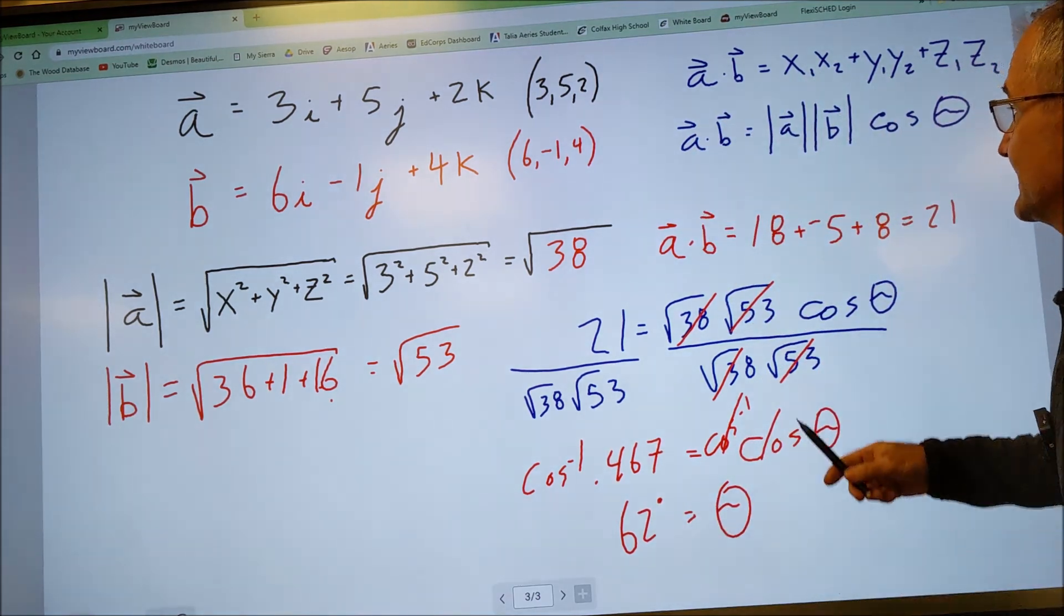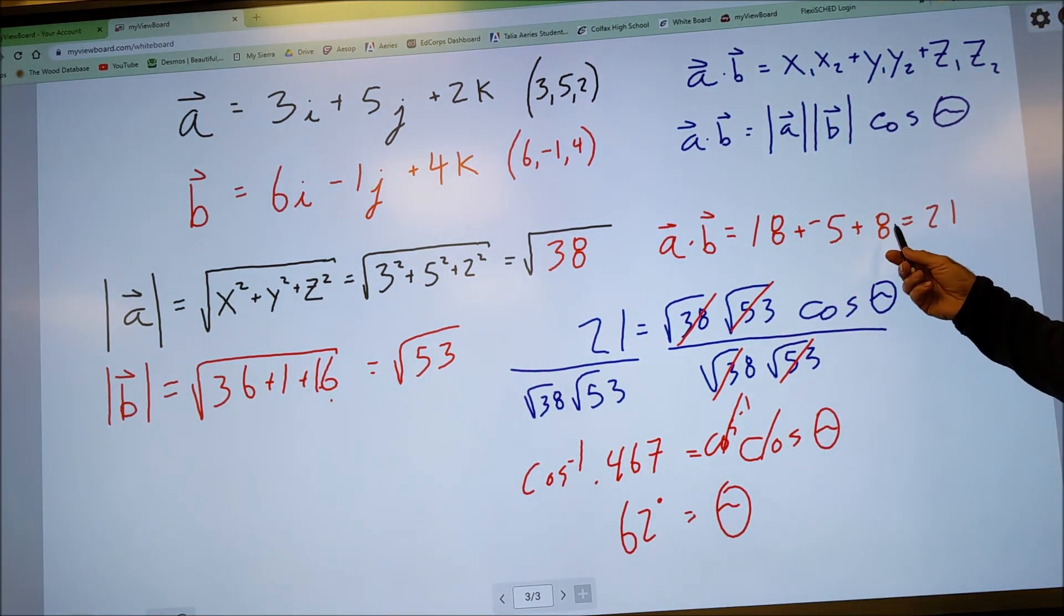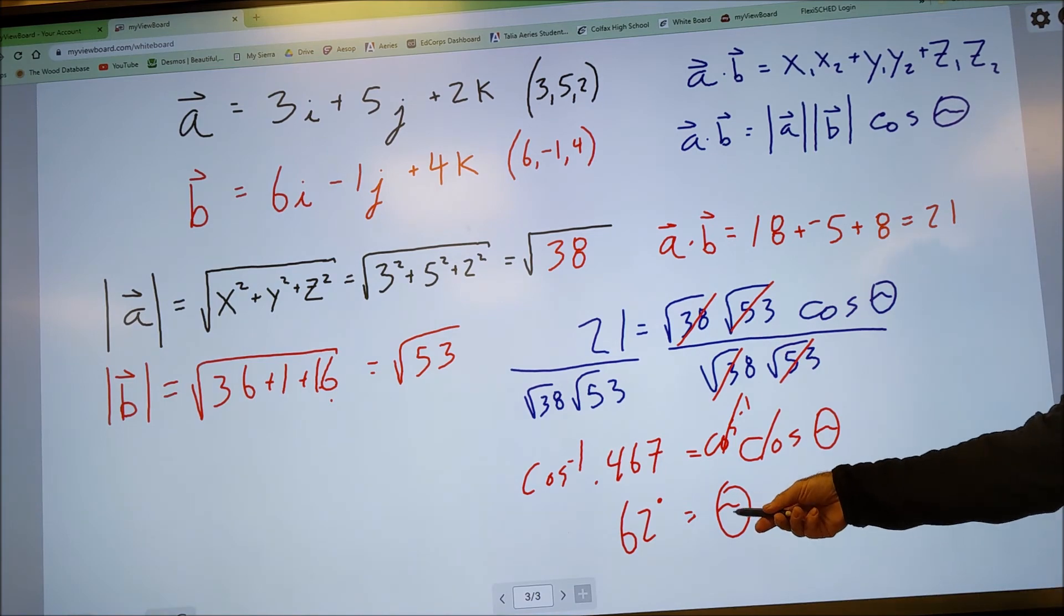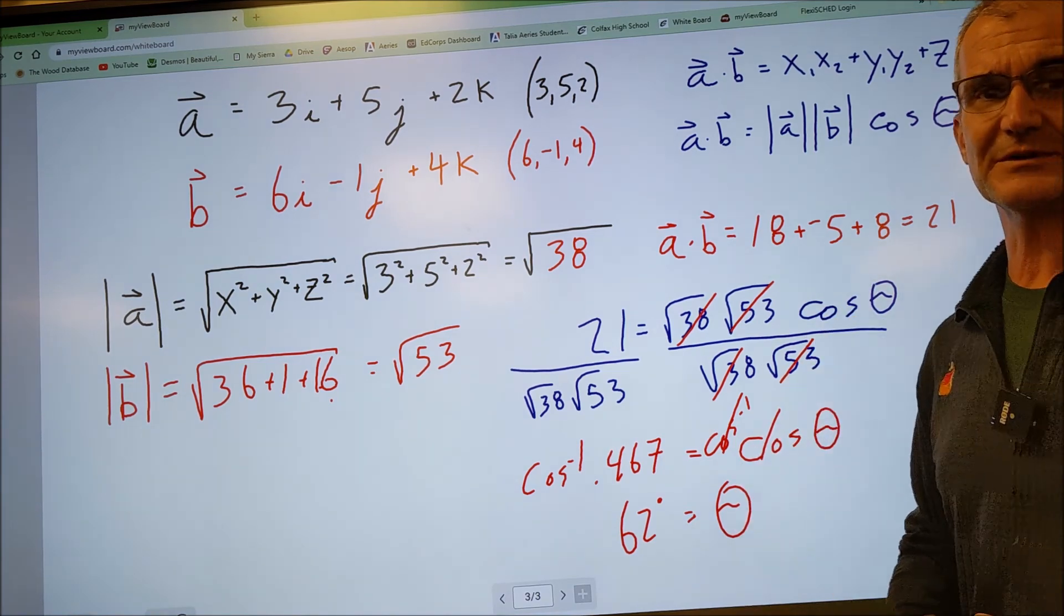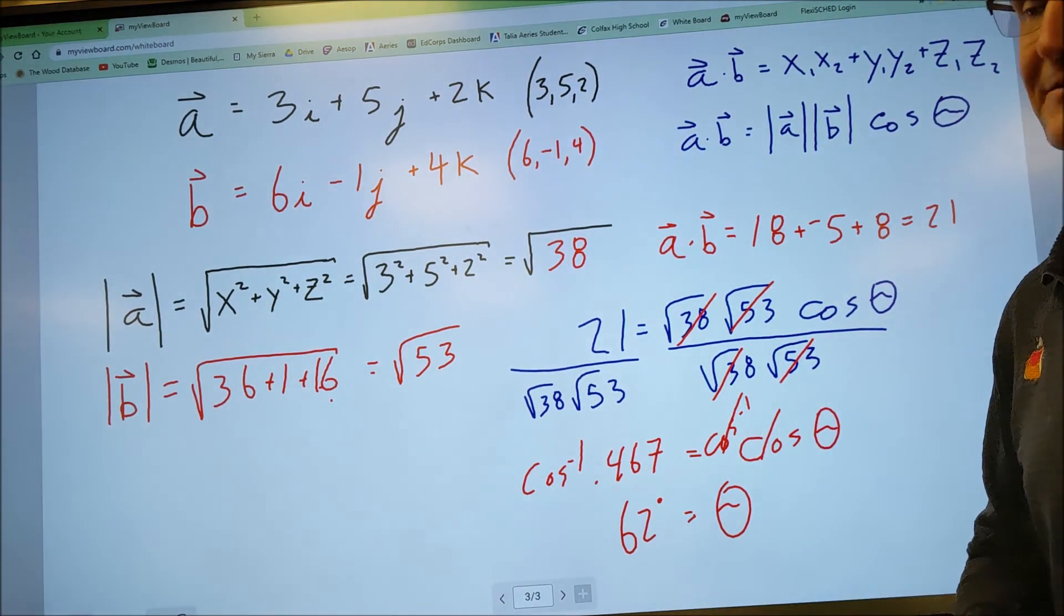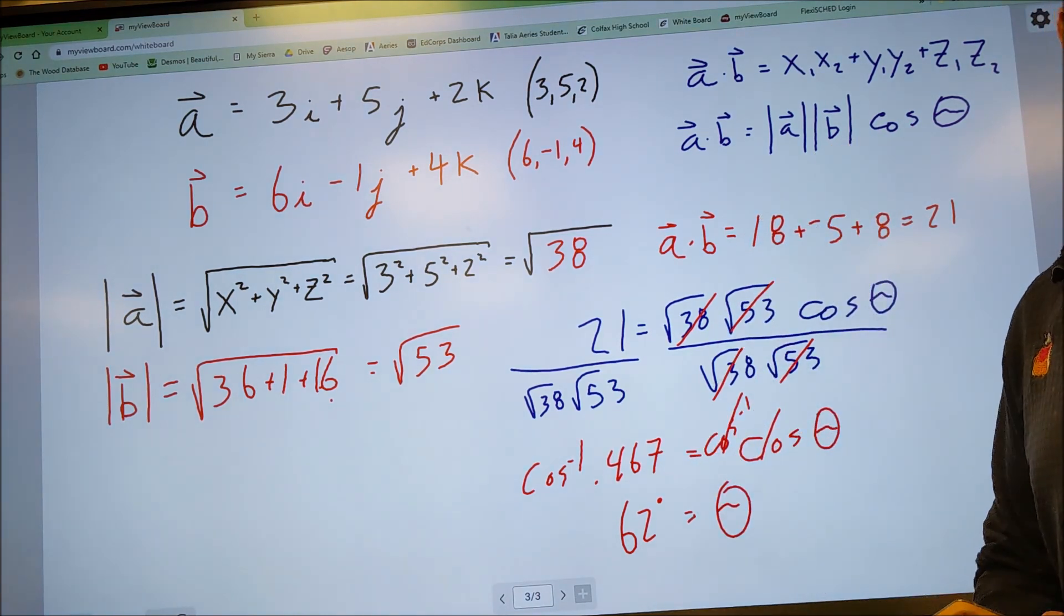So again, that's how you find a dot product and then also the angle between two three-dimensional vectors. Please comment below with any more questions you might have. If you liked the video, think about subscribing and hitting the like button. Thank you for watching.